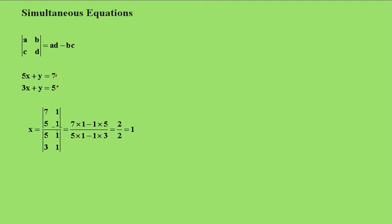You multiply the 7 times the 1, minus the 1 times the 5, and the bottom same thing, 5 times the 1 minus 1 times the 3. And of course 7 minus 5 gives me 2, and 5 minus 3 gives me 2, which gives the answer 1.